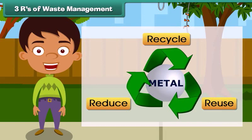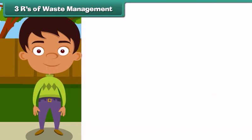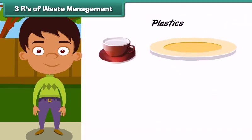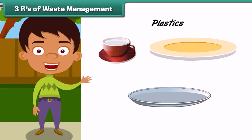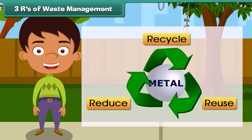The second R stands for reuse. Reuse means to use an item more than once. Plastic cups, plates and utensils are usually disposed of after a single use. Instead, we must reuse them after washing. The third R stands for reduce.